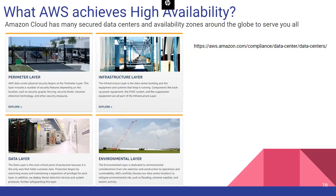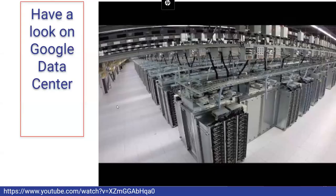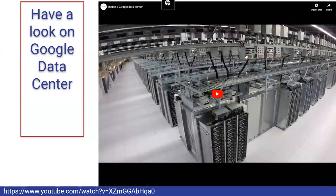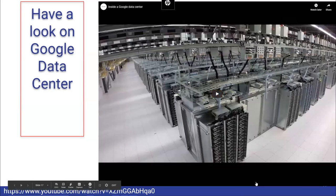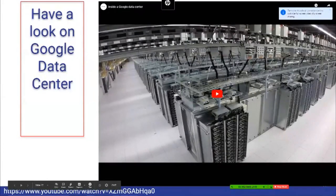AWS achieves high availability because it has multiple secure data centers with availability zones around the globe. If something goes wrong with one data center, data is still served from another. Now let's see a live example — a five-minute video about Google Cloud's data centers — just to get an idea of how things work. This is a Google Cloud example, not Amazon, but it gives the same concept.